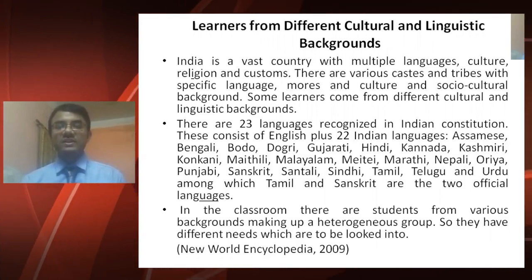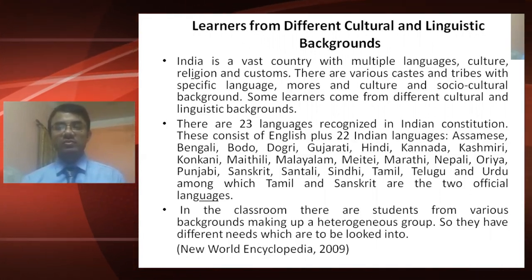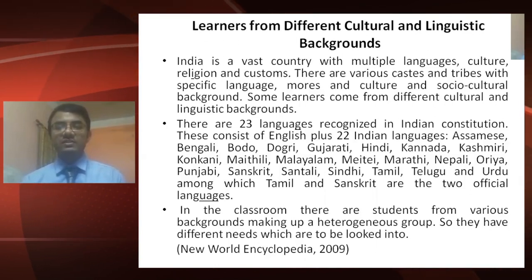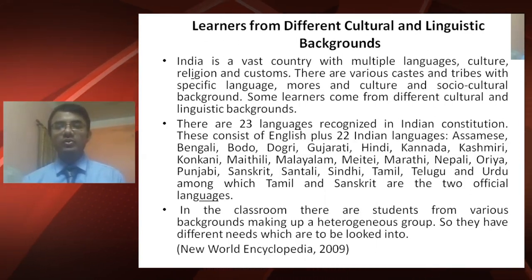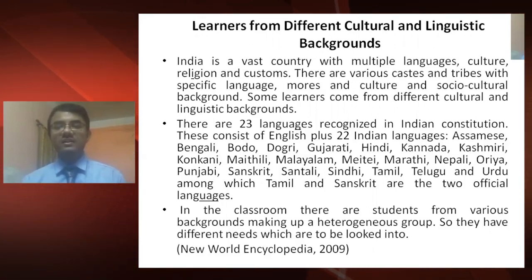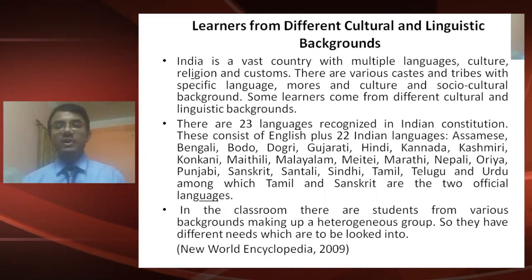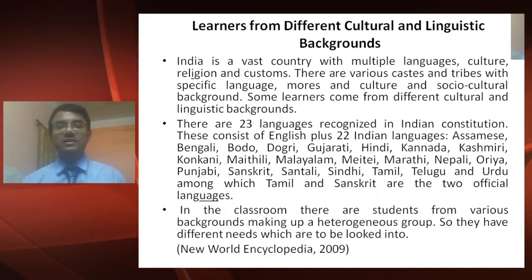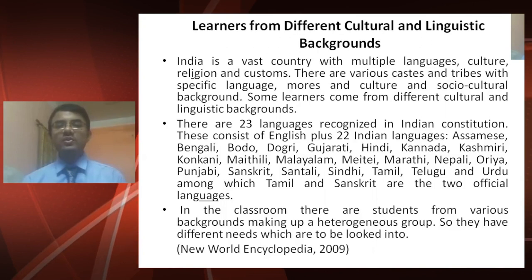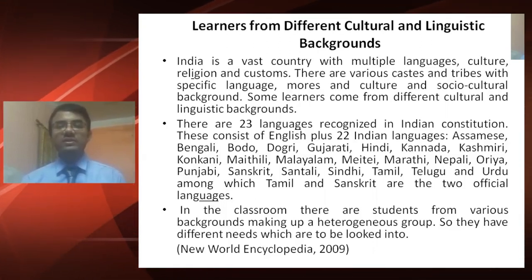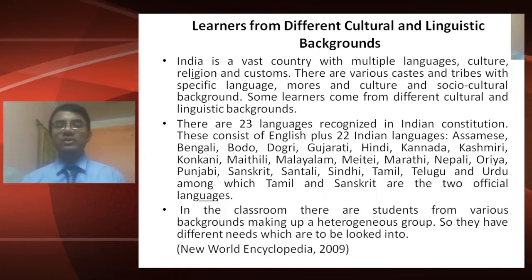One is English plus 22 other Indian languages, which include Assamese, Bengali, Bodo, Dogri, Gujarati, Hindi, Kannada, Kashmiri, Konkani, Maithili, Malayalam, Meitei, Marathi, Nepali, Odia, Punjabi, Sanskrit, Santhali, Sindhi, Tamil, Telugu, and Urdu. Among all these languages, Tamil and Sanskrit are the two classical languages.